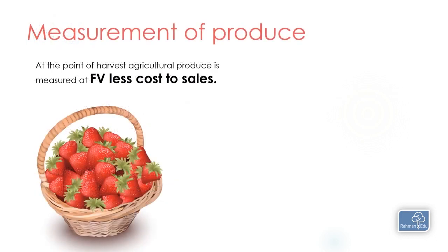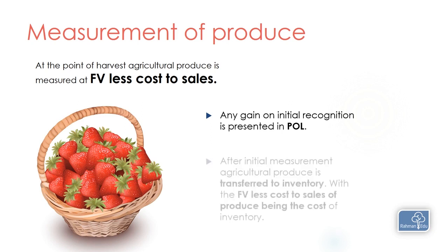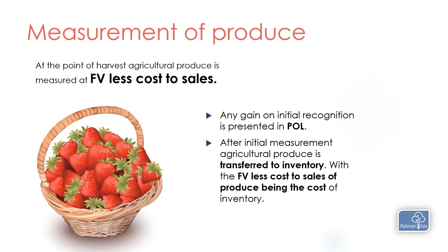At the point of harvest, agricultural produce is measured at fair value less cost to sell, and any gain or loss on initial recognition is presented in profit or loss, just like biological assets. After initial measurement, the agricultural produce is transferred to inventory and IAS 2 principles are applied. IAS 2 requires inventory to have a cost, so the fair value less cost to sell of the agricultural produce is considered as the deemed cost of that inventory.